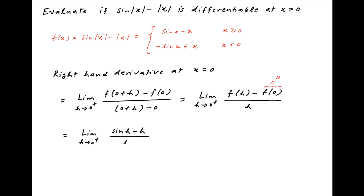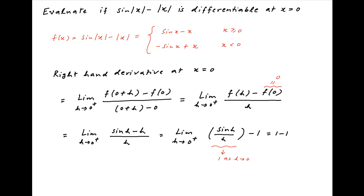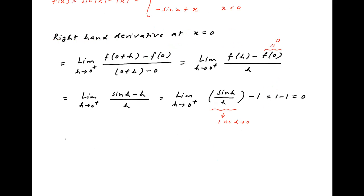Therefore, this is equal to the limit as h tends to 0 from the positive side of sin h minus h in the numerator divided by h. This can be written as the limit as h tends to 0 from the positive side of sin h upon h minus 1. Now, as h tends to 0, sin h upon h tends to 1, and therefore the value of the right-hand derivative is equal to 1 minus 1, which is equal to 0.